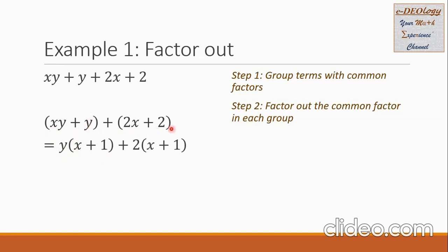In the second group, the common factor is the number 2. So I bring out 2, and what remains inside is x plus 1. Checking: 2 times x is 2x, and 2 times 1 is 2. So these are the correct factors for the second group.